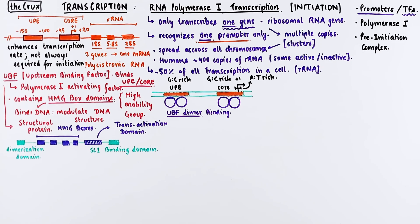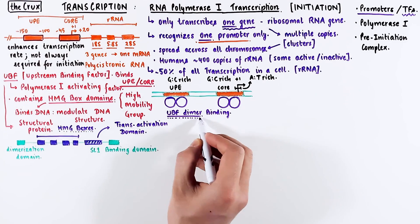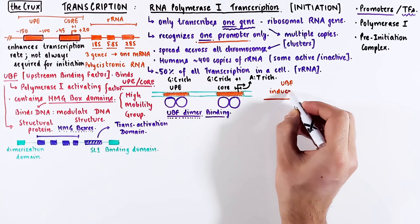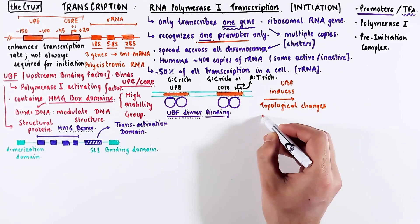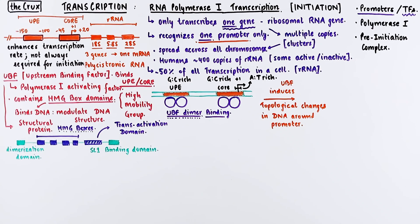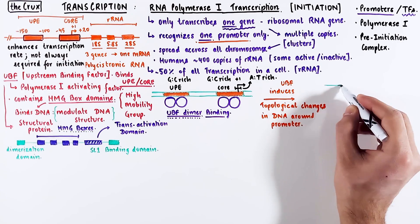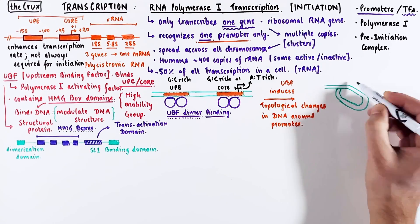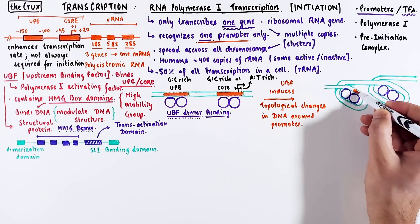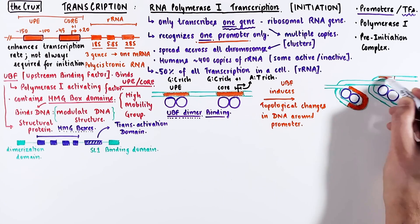So HMG boxes help the UBF dimer to bind at the promoter region. Upon binding, the UBF induces a topological change in the DNA where it binds around the promoter. This is what we meant when we said it binds the DNA and modulates its structure. If we visualize these topological changes, what we notice is that when the UBF dimer binds, the DNA wraps itself around the UBF dimer.